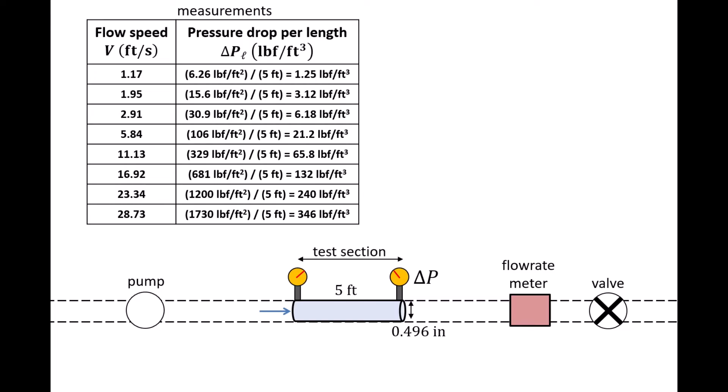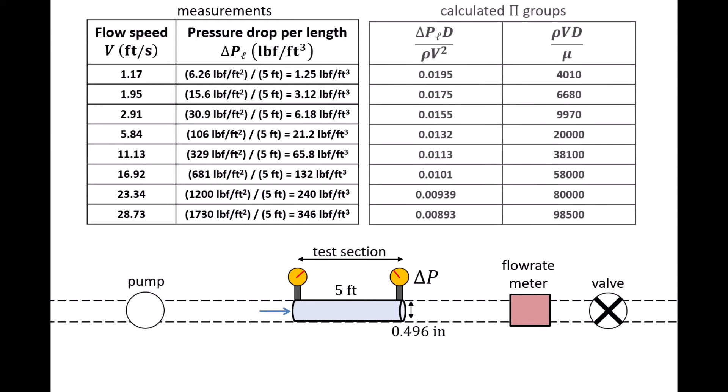When the flow speed is 28.73 feet per second, we measure a pressure drop of 1730 pounds-force per foot squared. We divide this value by 5 feet to obtain delta P/L, which is equal to 346 pounds-force per foot cubed.